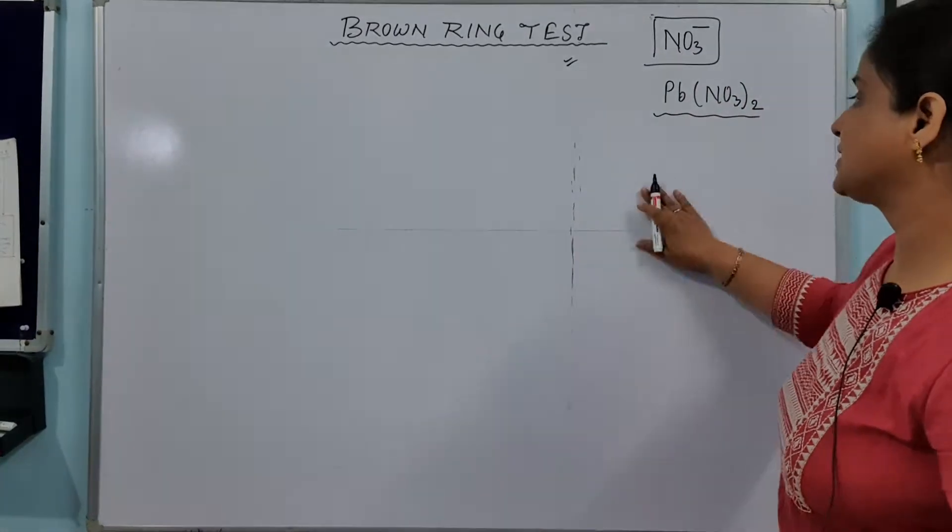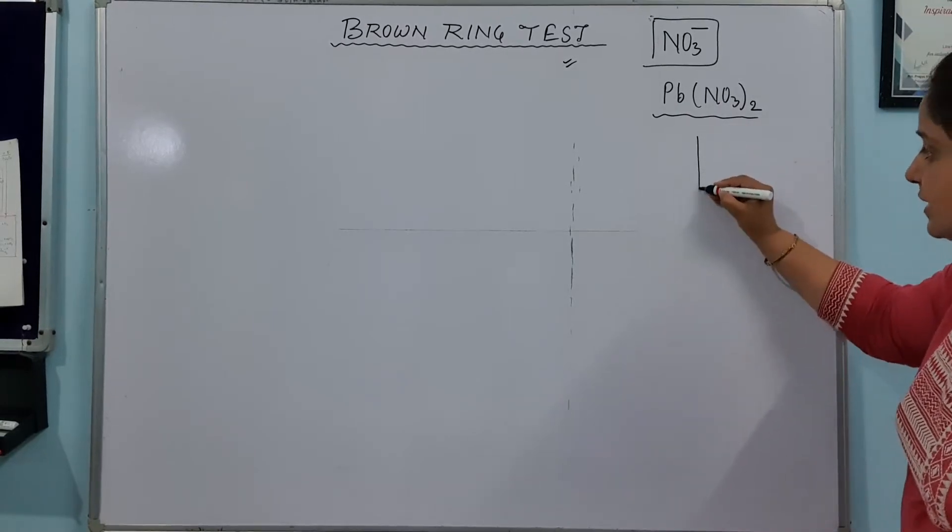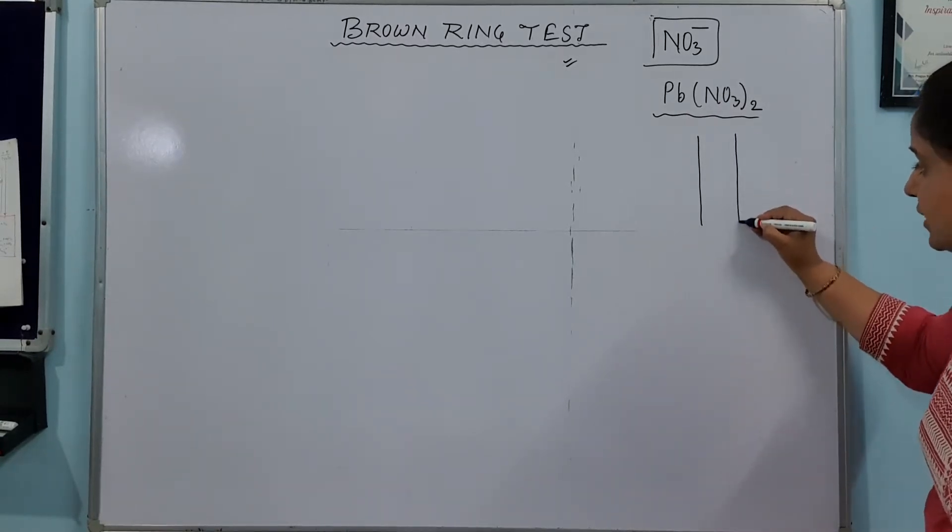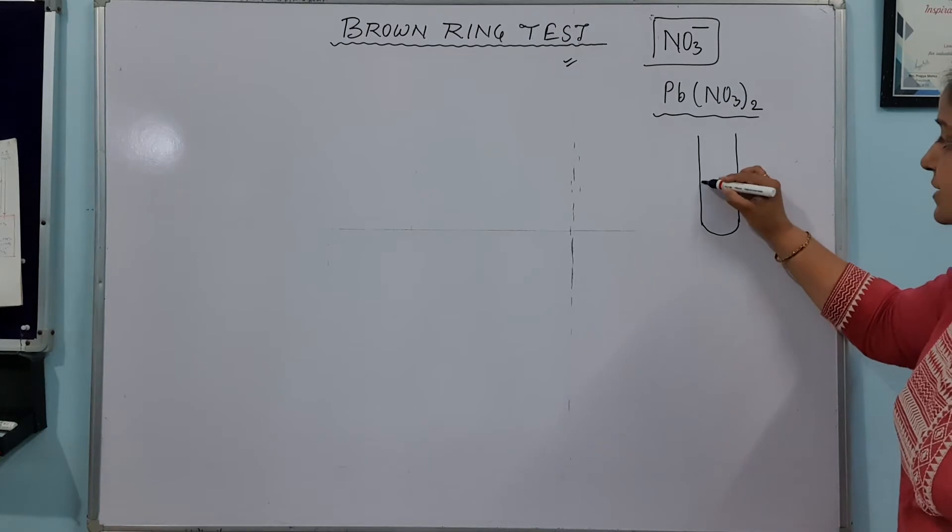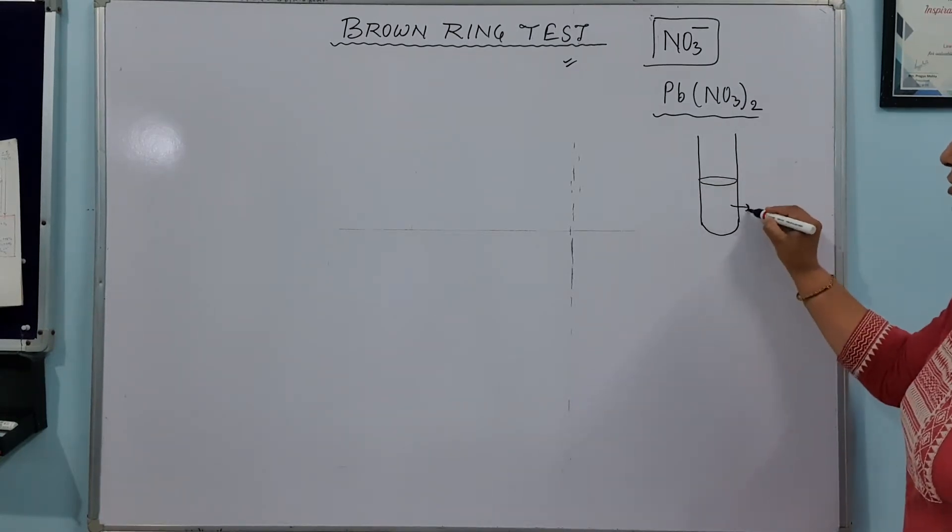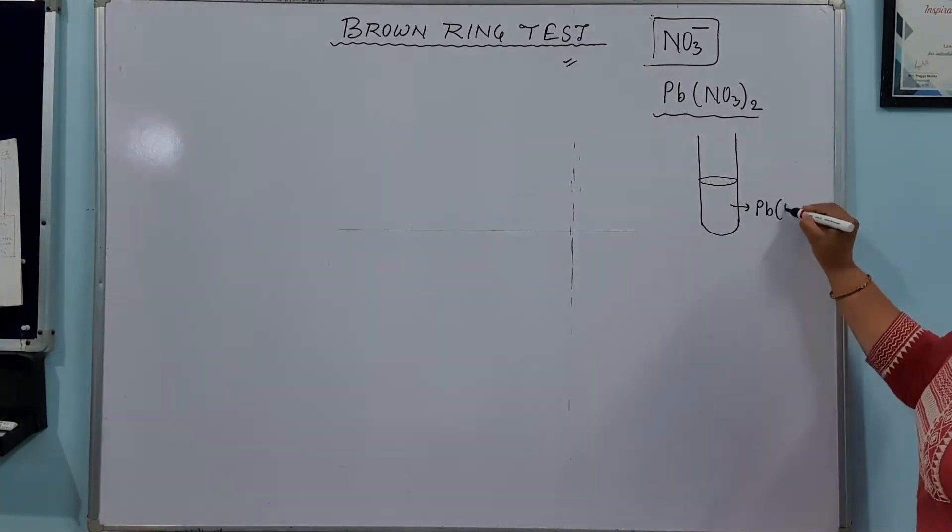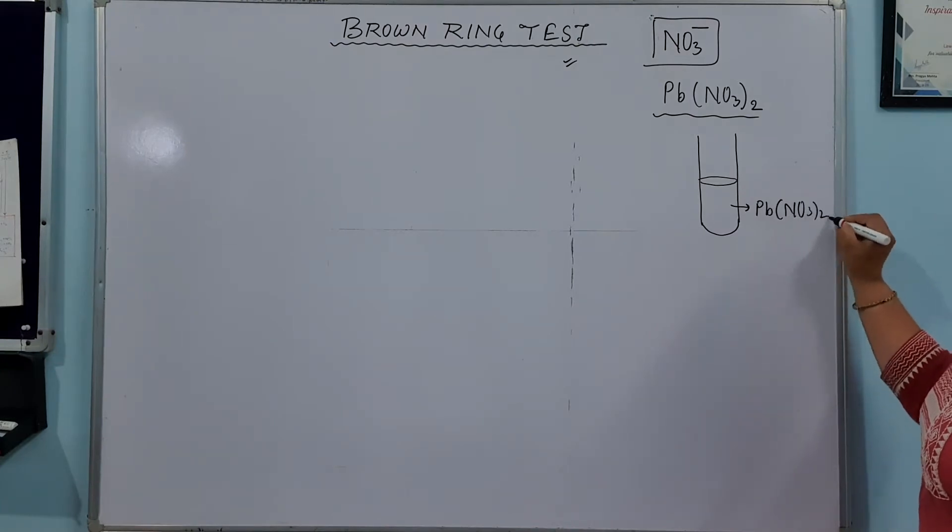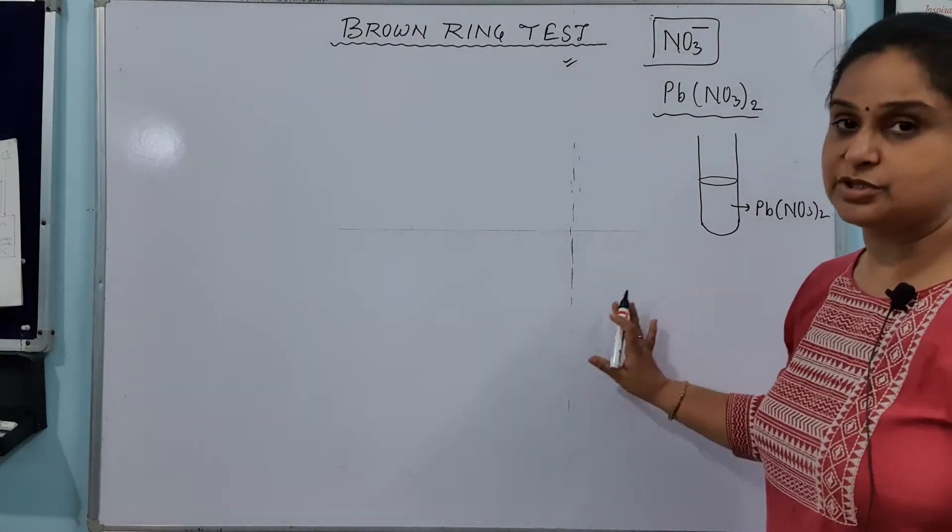So we are going to perform this test. How to perform it? First, you have to take the test tube and in this test tube you are supposed to take your solution of salt. So Pb(NO3)2 aqueous solution, original solution you are going to take.